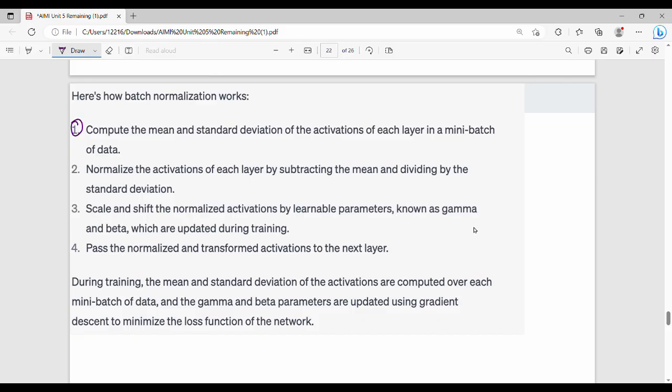Step number 1: Calculate mean and standard deviation for each layer in the mini-batch of data. Step 2: Normalize by subtracting the mean and dividing by standard deviation. Step 3: Scale and shift using learnable parameters gamma and beta. Step 4: Pass the normalized and transformed result to the next layer.